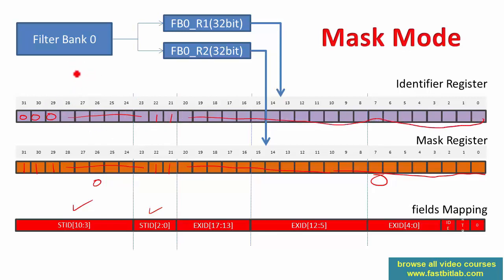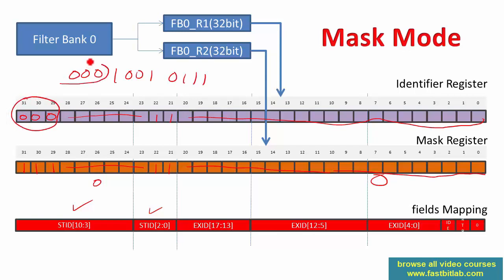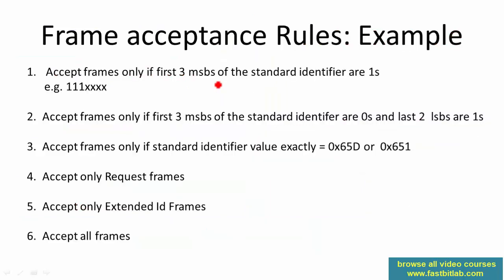Now suppose a frame is received with identifier 0 0 0 1 0 0 1 0 1 1 1. The first three fields are checked — they match exactly. The last two LSBs must be one — that is also true, so this frame is allowed into the FIFO. If matching succeeded on those three fields but failed on the LSBs (for example, if a LSB were zero), the frame would be discarded.